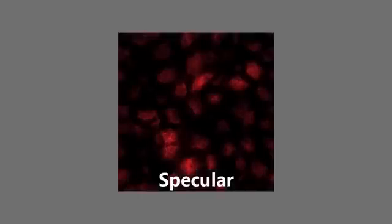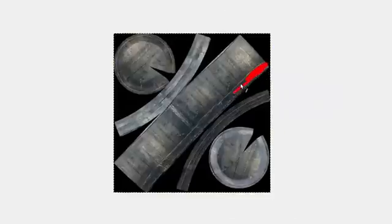In my specular maps I'm only going to be using the red channel, and the more red a part of the map is, the shinier the corresponding part of the model will be. For example, here I'm making the specular map for the barrel — I want the metal parts to be shinier than the wooden parts. So I colour all the metal parts in full red because I want them to be very shiny, and everything else I make a dark red so it will still be a little shiny, but a lot less so than the metal parts.